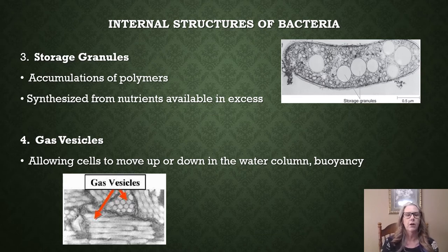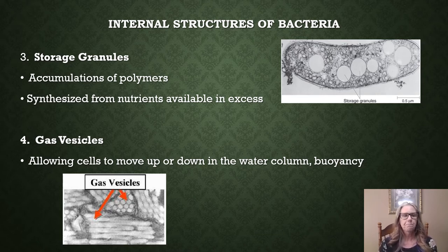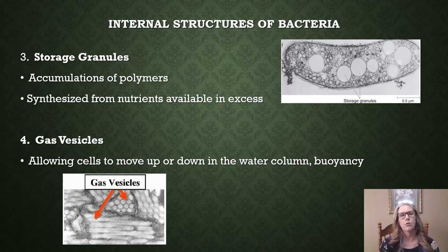Something else we find inside bacteria are gas vesicles. What they do is allow a bacterial cell to move up or down in a water column. This is very applicable to bacteria normally found in aquatic environments. Bacteria can grow in aquatic environments like broth cultures and out in the environment. Gas vesicles allow for buoyancy — they allow the cell to move up or down in that water to grow at optimal conditions.